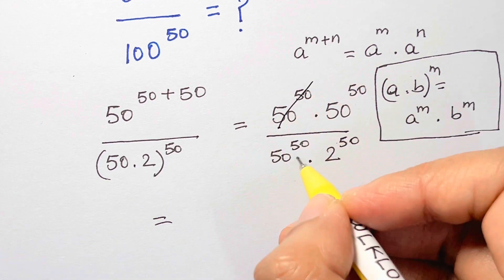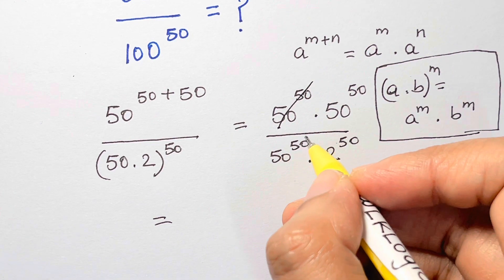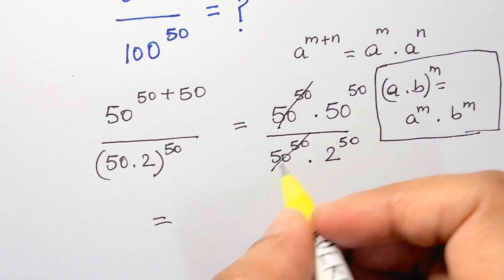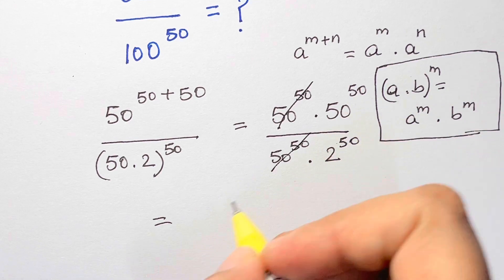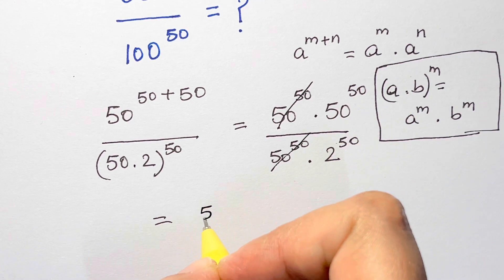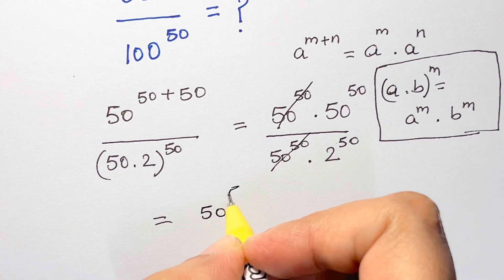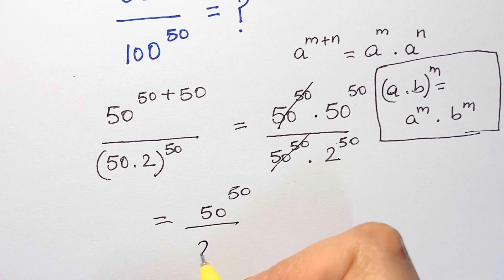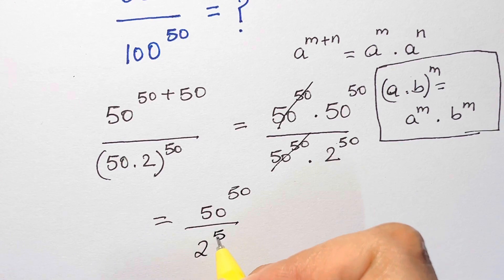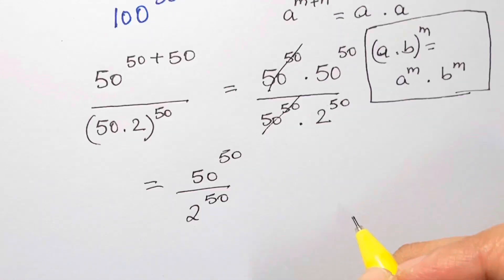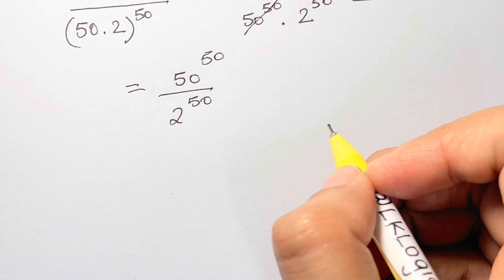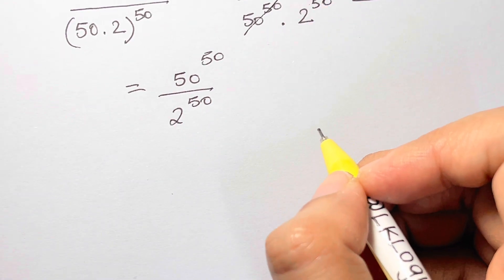Now 50 to the power of 50 in the numerator and 50 to the power of 50 in the denominator — let's cancel both. Now I have 50 to the power of 50 over 2 to the power of 50.